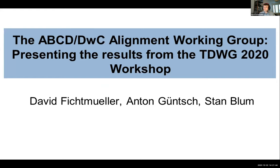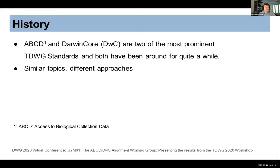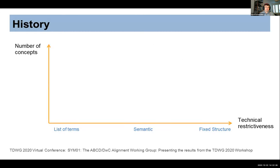Hello everybody. I'm David Fichtmüller, here to give a report on the workshop we had in September during the TDWG workshop week of the ABCD Darwin Core Alignment Working Group. Since we have many people here, I'll step back a bit for those new to the community. ABCD — Access to Biological Collection Data — and Darwin Core, commonly abbreviated DWC, are two of the most prominent TDWG standards. They've been around for quite a while and have gone through several changes and iterations. Both cover similar topics in the range of occurrence and collection data, but have slightly different approaches.